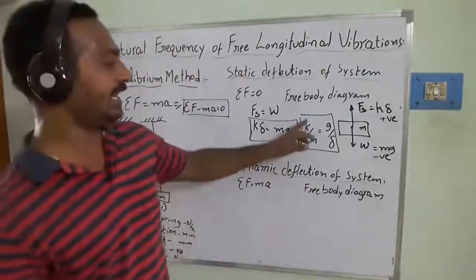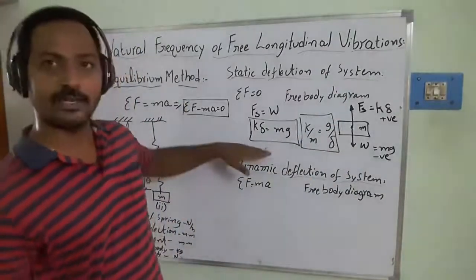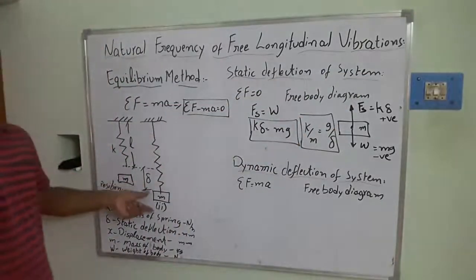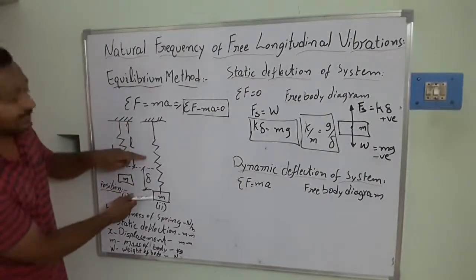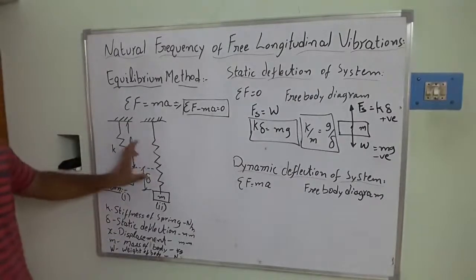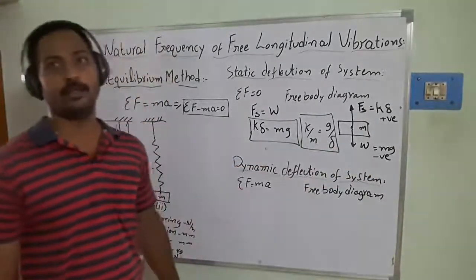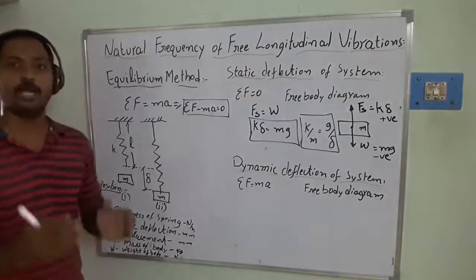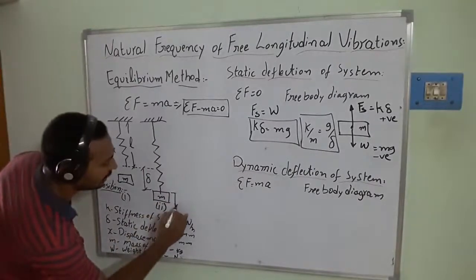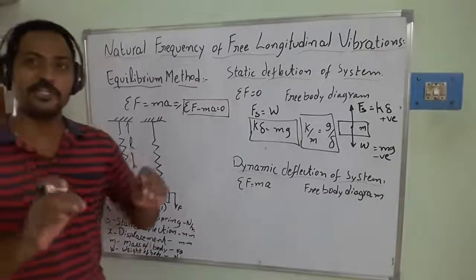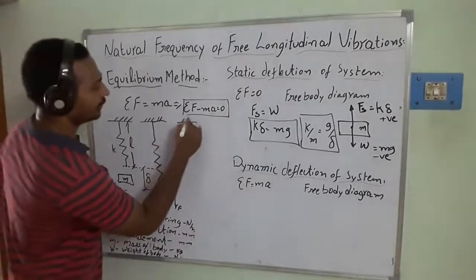From this, k/m = g/δ — this equation is used in the next level of derivation. The static deflection of the spring, when loaded with mass and elongating downward, develops internal elastic strain energy. After position two, I apply an initial displacement force to the system. This force is only for the initial displacement; after that I remove it. Once the force is applied and then removed, the spring-mass system starts vibrating.